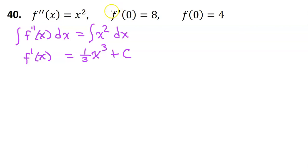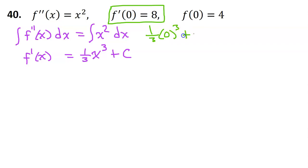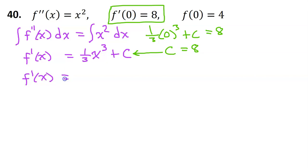So let's go ahead and use this initial condition to figure out what c is. So f prime at 0 is 8, meaning that 1/3 times 0 to the third power plus c is equal to 8. Well, this whole term is just 0, so I just have c is equal to 8. Substituting that back in, we have f prime of x is equal to one-third x to the third power plus 8.